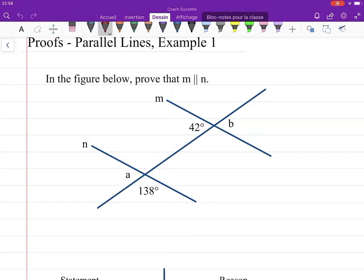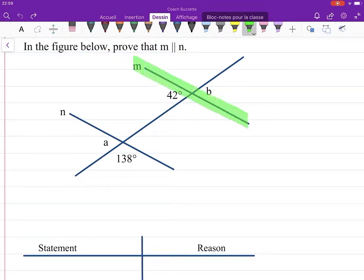Hello and welcome back. Let's do a proof. We are given in the figure below: prove that m is parallel to n. So that would be these two lines—you need to prove that they are parallel given some information in the diagram. We can see we have a few measures and we have a couple of labeled angles.